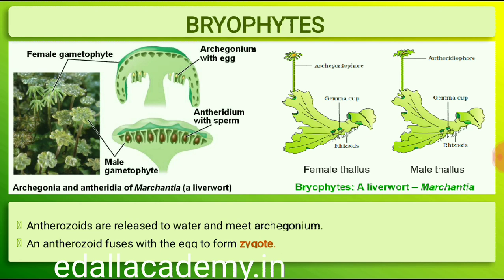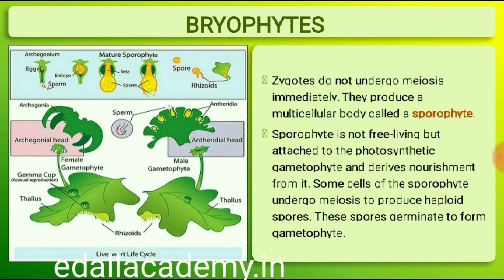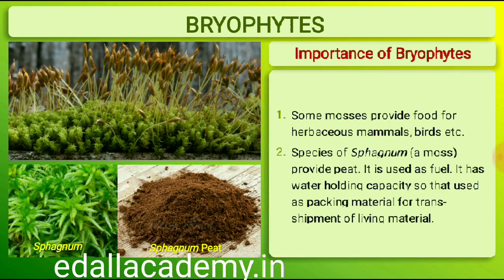An antherozoid fuses with the egg to produce the zygote. Zygotes do not undergo reduction division immediately; they produce a multicellular body called a sporophyte. The sporophyte is not free-living but attached to the photosynthetic gametophyte and derives nourishment from it. Some cells of the sporophyte undergo reduction division (meiosis) to produce haploid spores. These spores germinate to produce gametophytes.